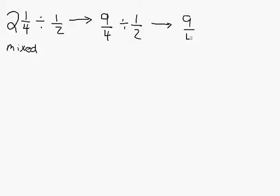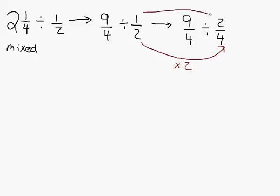Nine-fourths stays nine-fourths. And we're dividing it by two-fourths. You can see here that all we did was multiply the two by two, and we also multiply the numerator by two.